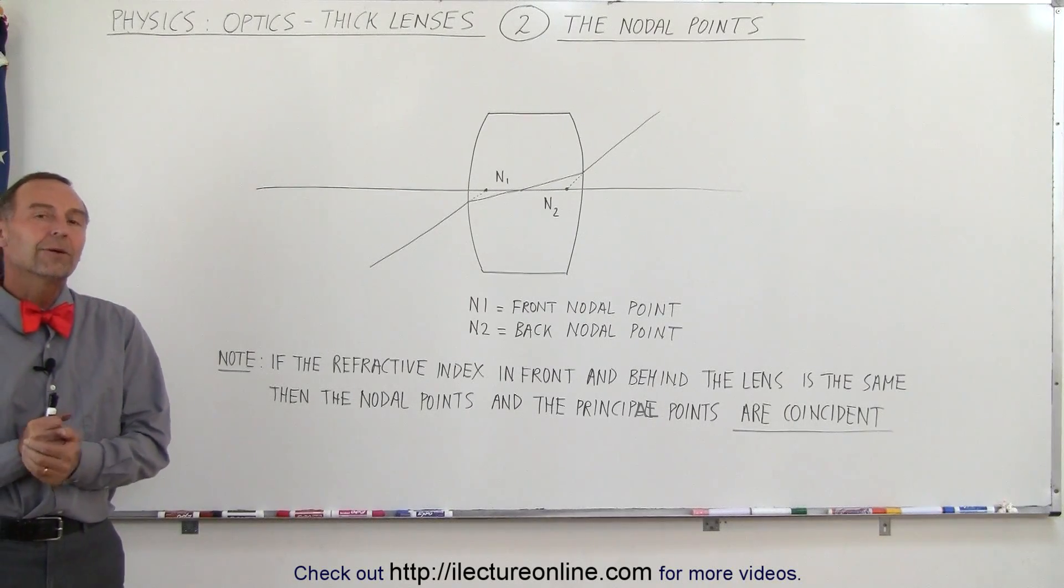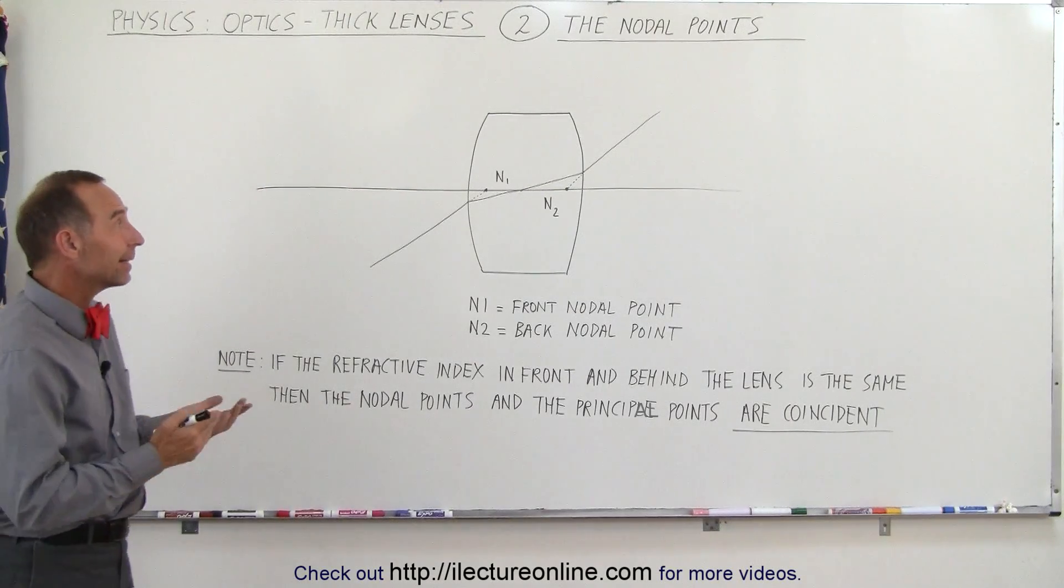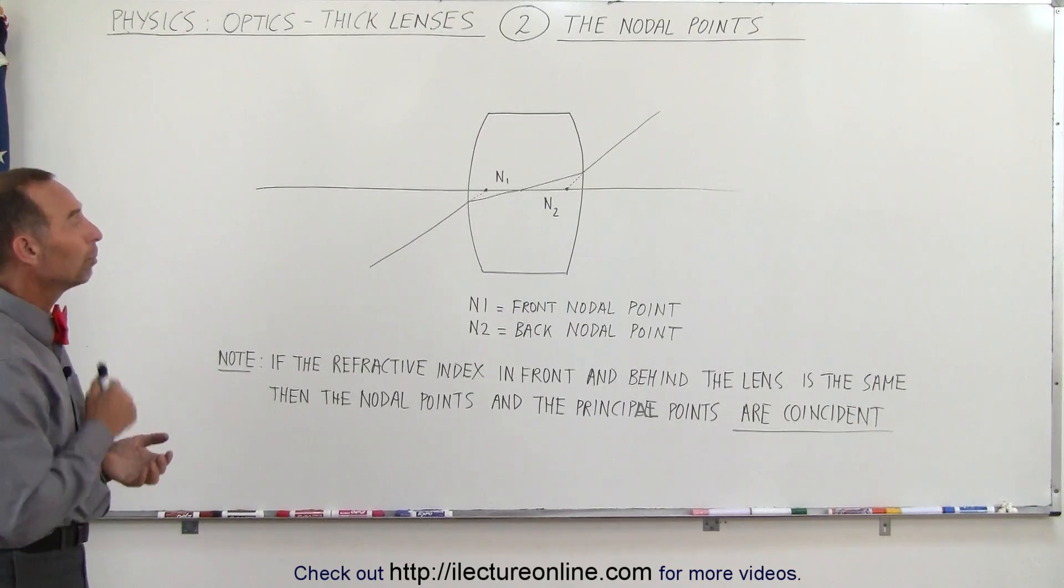Welcome to ElectronLine. Another important set of points on a thick lens are what we call the nodal points.